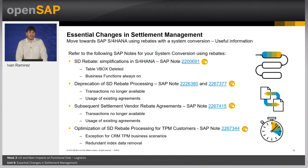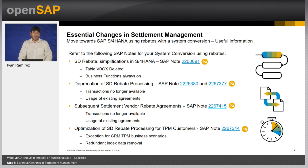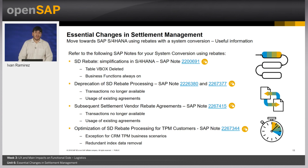Transactions for creation and extension of SD rebate agreements are no longer available. Existing rebate agreements can only be processed up until the end of the validity date and must then be closed by a final settlement. New agreements can only be created based on condition contracts. For vendor rebate agreements, the subsequent settlement application is replaced by the new contract settlement application. In SAP S/4HANA it is no longer possible to create new rebate agreements using transaction MEBI or extend existing rebate agreements using transactions MEBV, MEB7, or MEBH. However, there is one exception: customers using CRM Trade Promotion Management with S/4HANA need to use SD rebate processing. Please refer to SAP Note 2267344 for simplification on the database footprints and required actions for customers using CRM TPM with S/4HANA.